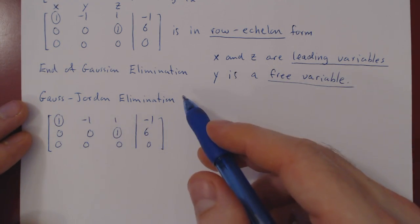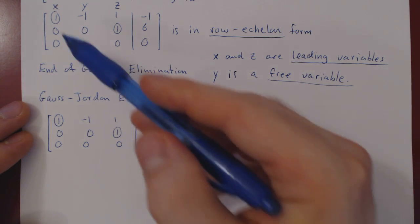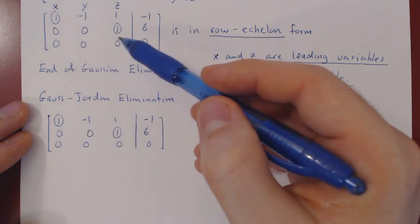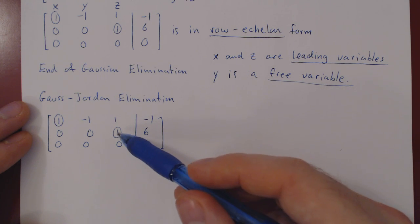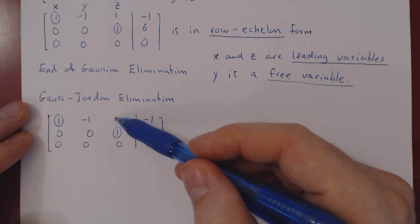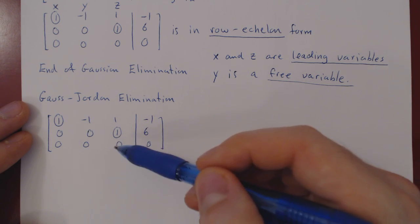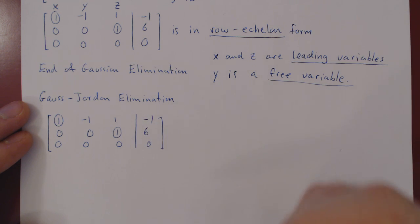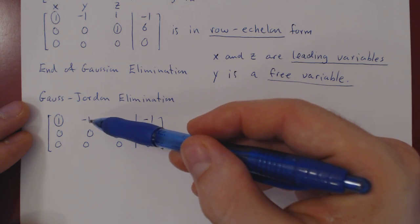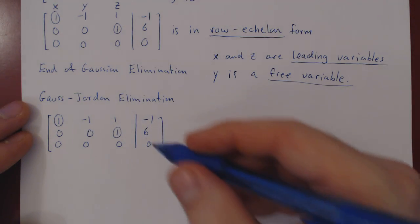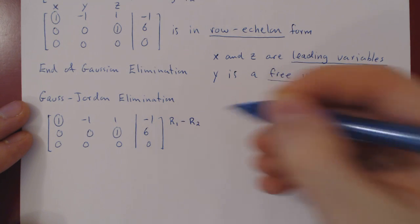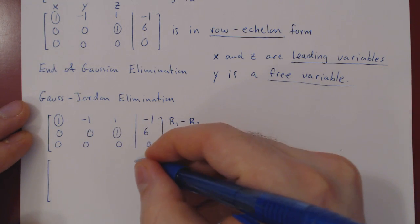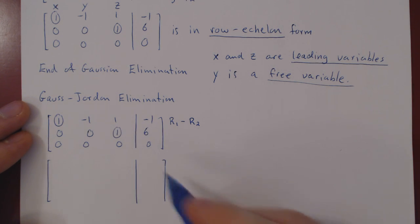Gauss-Jordan elimination works backwards. The first step was to introduce leading ones and zeros below them. Now, starting from the last leading one — the leading one in the bottom row — we introduce zeros above it as well. We work from the last leading one up to the very first. To kill the entry above the last leading one, we do row one minus row two. We recopy the bottom two rows since we are not changing them.